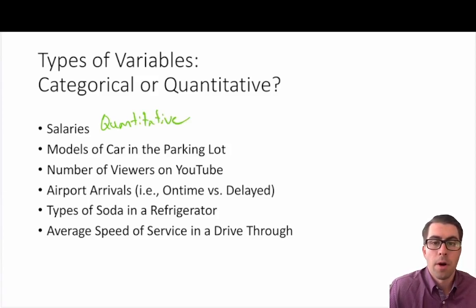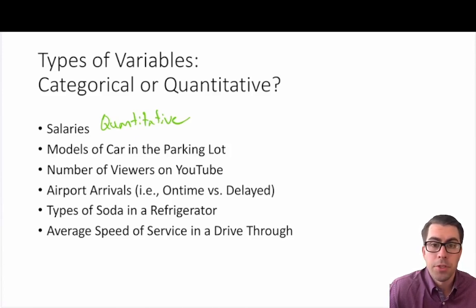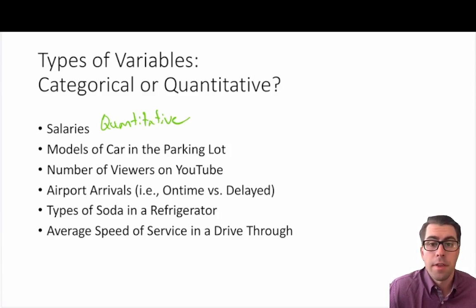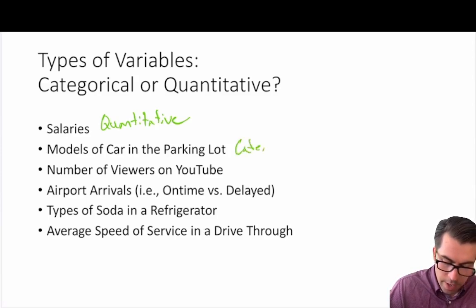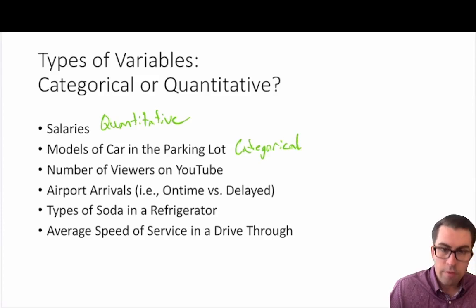What about the models of car in a parking lot, say the last time you went to the mall? There might be Hondas, Toyotas, Jeeps, Chevrolets, or even a Tesla, but this information tells us nothing about anything that is being measured — it's just telling us about the models of car in the parking lot. So in this case we're going to call this a categorical variable.